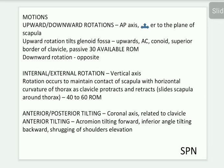Regarding motions, upward and downward rotations occur around an anteroposterior axis perpendicular to the plane of the scapula. Upward rotation tilts the glenoid fossa upwardly. After the clavicular ligament — via the conoid — the superior pull of the clavicle allows a passive range of motion of 30 degrees. Downward rotation is the exact opposite.